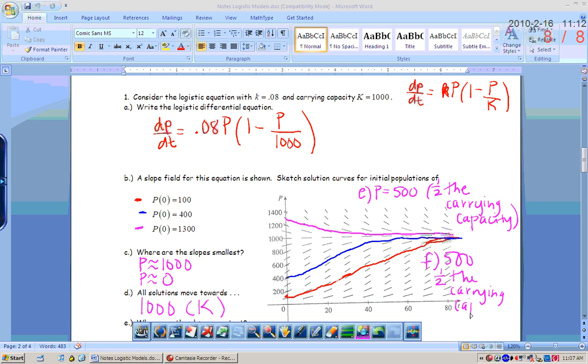You can kind of see that on these graphs that I drew, your concavity is changing from concave up to concave down at some point. And it's right at 500, which is also always going to be half the carrying capacity. Yes, it's 500 on the y.